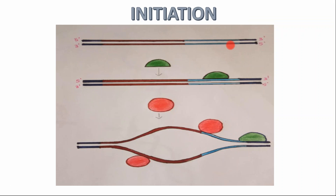In initiation, there will be initiator proteins which will try to identify a specific region in the DNA molecule. That region is known as the origin of replication, and from that region the replication actually starts. The initiator proteins will recognize that origin of replication and bind to that region.